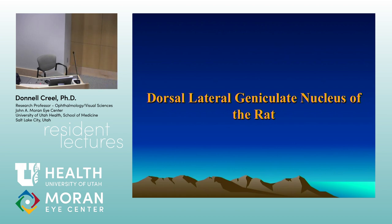Unlike primates and even cats, whose lateral geniculates have strict laminations — layers across that look like stacked sheets — in the primate geniculate, each layer column represents a point in the world. A flashing LED stimulates fibers down a column through all those layers, which then projects to binocular cells in the visual cortex. That's the concept of stereovision: this point in space is maintained through a column in the geniculate and onto binocular cortical cells. If you don't have that, you don't have binocular stereovision.